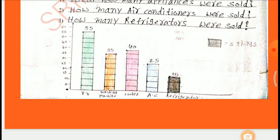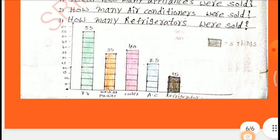Bar graph values: TVs — 11 boxes, 11 into 5 = 55. Washing machines — 7 boxes, 7 into 5 = 35. Coolers — 8 boxes, 8 into 5 = 40. ACs — 5 boxes, 5 into 5 = 25. Refrigerators — 3 boxes, 3 into 5 = 15.